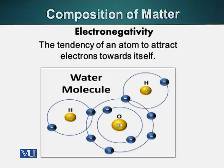When oxygen atom forms two bonds with hydrogen atoms, it results in the formation of water. So, oxygen atom has two covalent bonds with hydrogen and has two electrons in other orbitals which actually belong to the oxygen atom. I would now like to explain another concept which is very important in biologically active molecules.